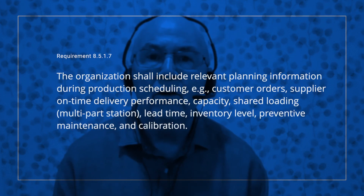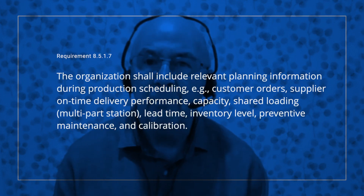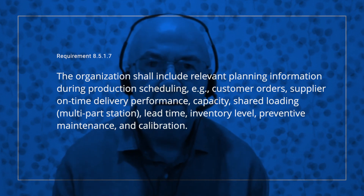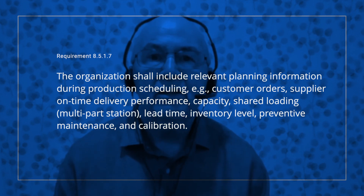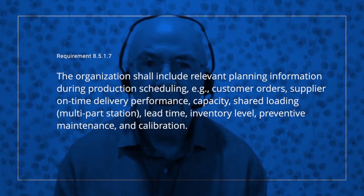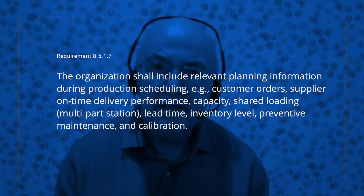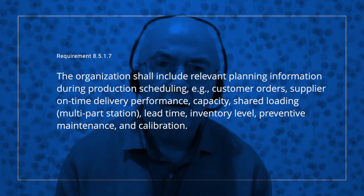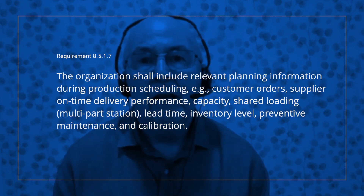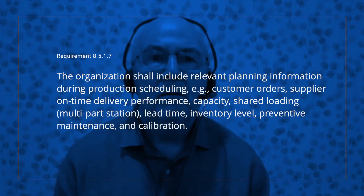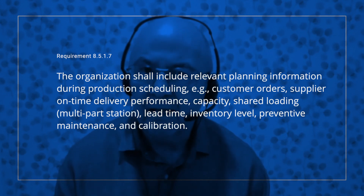The organization shall include relevant planning information during production scheduling, for example: customer orders, supplier on-time delivery performance, capacity, shared loading, which could include multi-part station, lead time, inventory level, preventive maintenance, and calibration.